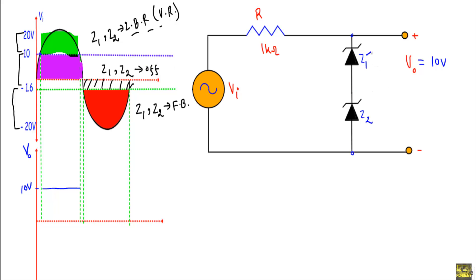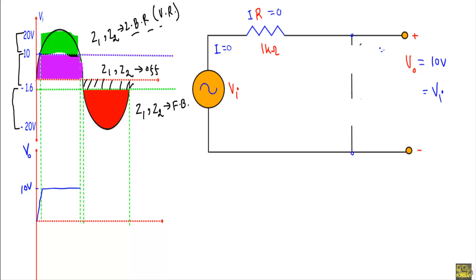For the region from -1.6V to +10V, Z1 and Z2 are in the off state. I can replace Z1 and Z2 with open circuits. In this equivalent circuit, the current flow i equals zero, so the IR voltage drop across the 1kΩ resistor is also zero. Therefore, the output voltage equals Vi — the output follows the same waveform as the input. From this point to this point, as the input changes, the output will have the same waveform down to -1.6V.